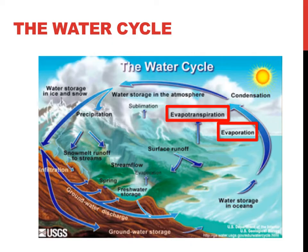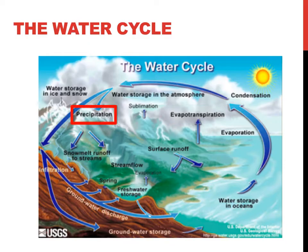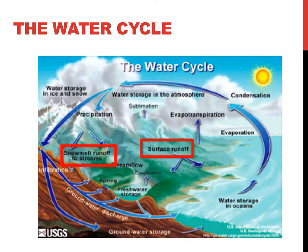Water leaves living organisms such as plants in a process called transpiration or evapotranspiration, both of which are highlighted here. Water leaves the atmosphere and lands on the earth through a process called precipitation. Water also melts from snow at high elevations in the mountains and from large levels of precipitation in a process called runoff.